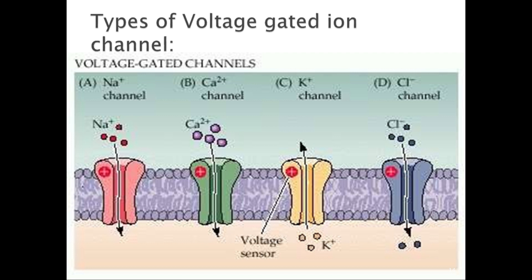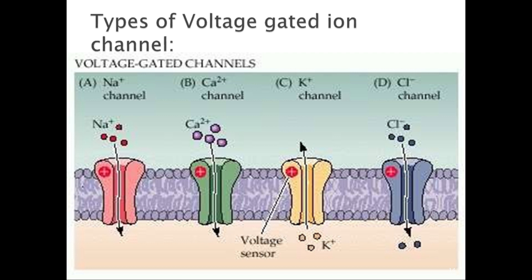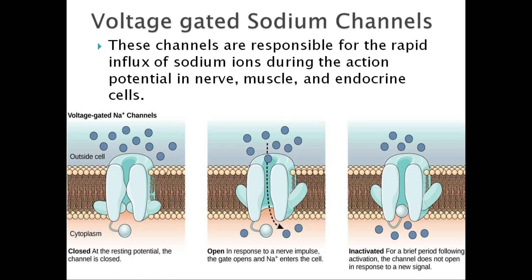There are mainly four types of voltage-gated ion channels: sodium, potassium, calcium, and chloride. Voltage-gated sodium channels are responsible for the rapid influx of sodium ions during the action potential in nerves, muscles, and endocrine cells. The mechanism of action of sodium channels is given in the diagram.